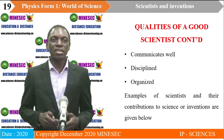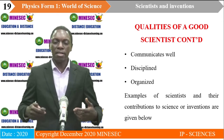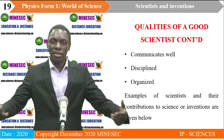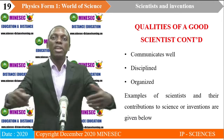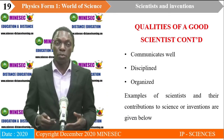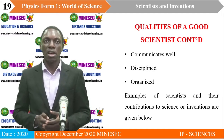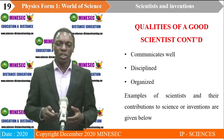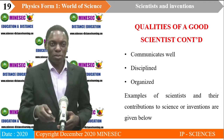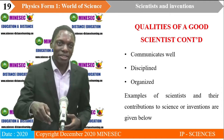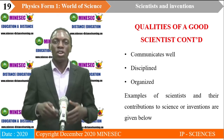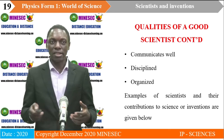A good scientist communicates well. In certain situations you will find yourself working with other scientists, and to work well you should be able to communicate with them — so communication skills are very important in science. A good scientist is disciplined, always at the right place, at the right time, for the right activity. A good scientist is also organized.